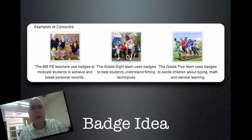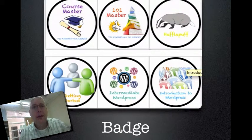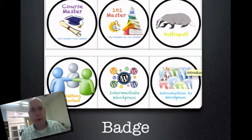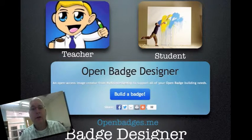Here are some examples that my school uses. The PE department is a great place to award badges — totally makes sense. I've got the grade 8 team working on it, the grade 5 team, and other groups as well. Then you need to actually have a badge — here are some sample badges. This is for a professional development program at Concordia where people can get badges for finishing courses and for being a member of various groups. You need a badge designer. We have a teacher at Concordia who designs badges for us, but you might want to find a student who can do it. If that's not available, you can always use openbadges.me — it's a free service and it's easy to create badges there.